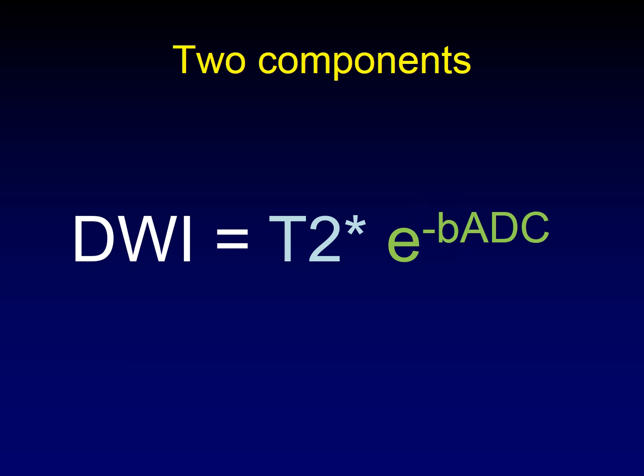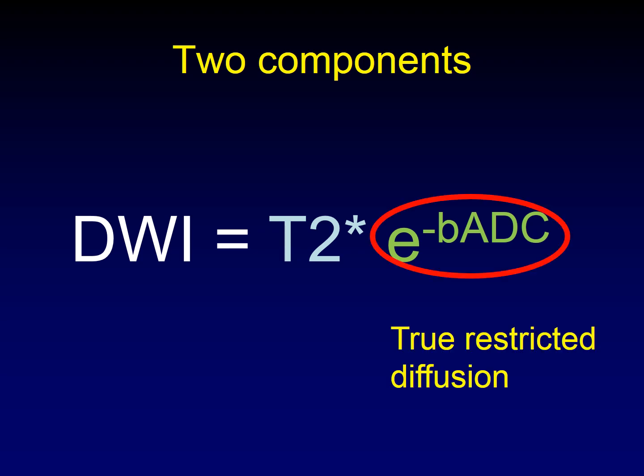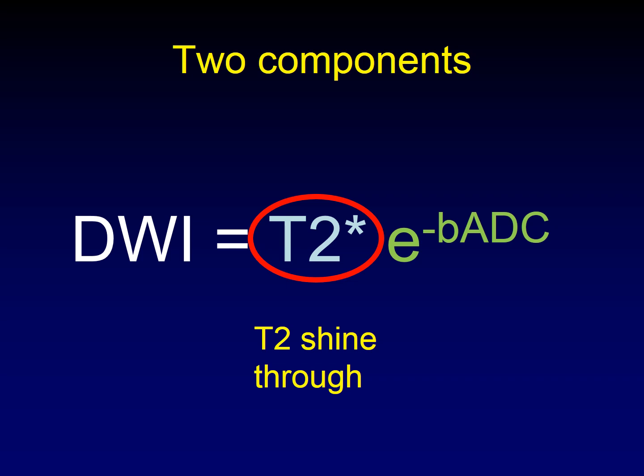Now, looking at this again, you can see that there are two components that make up DWI. One component is the exponential component, true restricted diffusion. That's what we're trying to detect when we do a diffusion-weighted image. The other component is this T2-weighted component. And when you have bright signal in your DWI, it might be because you have true restricted diffusion, or it might be because the T2 star is bright. We call that T2 shine-through, and it's the biggest problem we have with diffusion-weighted imaging. Is that brightness we see on diffusion-weighted imaging the result of true restricted diffusion, or is it the result of T2 shine-through?